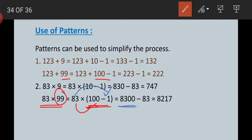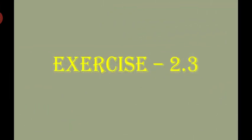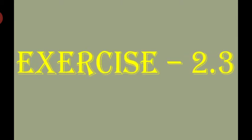83 multiplied by 100 equals 8300, and 83 multiplied by 1 equals 83. Subtracting these two we get 8217. In this way you can convert 9, 99, or 999 to the form 10 minus 1, 100 minus 1, or 1000 minus 1 — then multiply and subtract. That is how you solve the questions of exercise 2.3. Thank you.